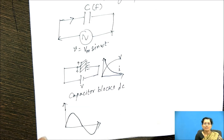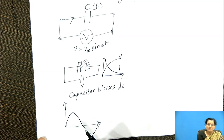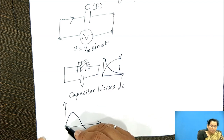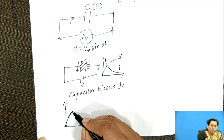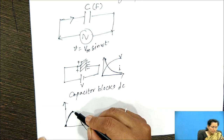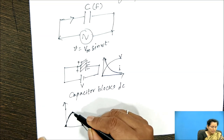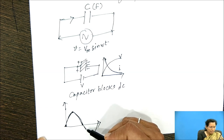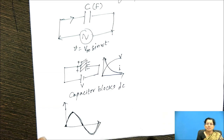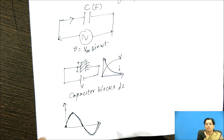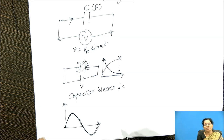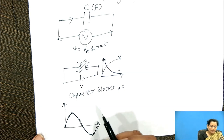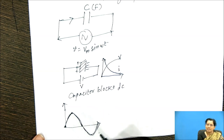Now consider the AC cycle. If we connect the AC cycle to this capacitor, the capacitor fully charges to the maximum voltage. Then the discharging process occurs due to the decrease in voltage, so there is continuous charging and discharging. Continuous current flows through the circuit, so we can say the capacitor passes AC.